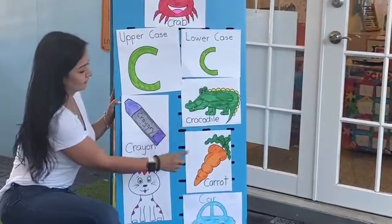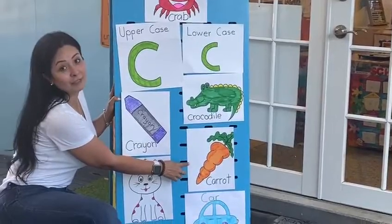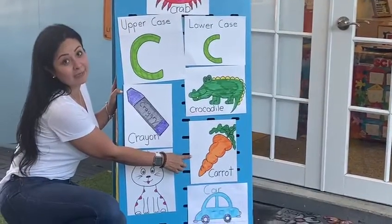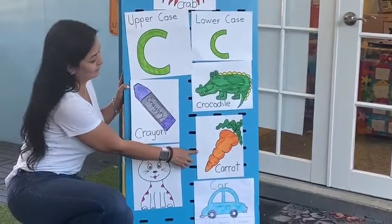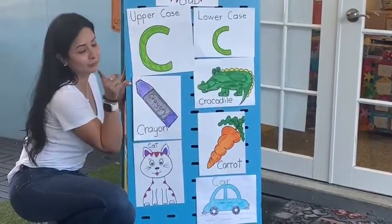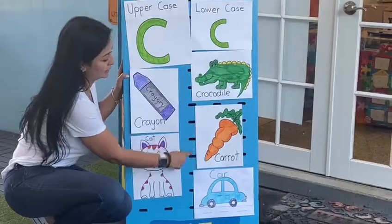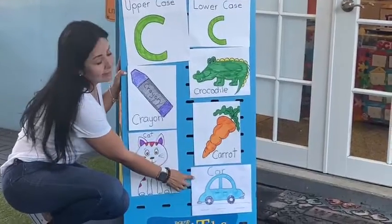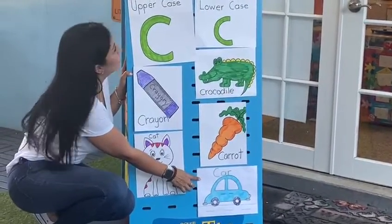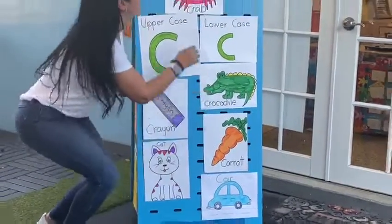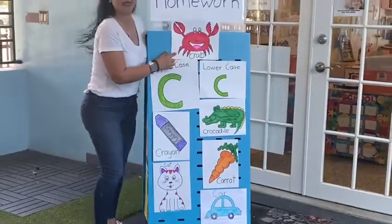Crocodile. Carrot. Carrot is a vegetable — it's really healthy. The vegetables are really healthy. That's a car. And that's a crab.